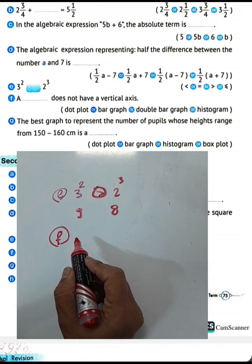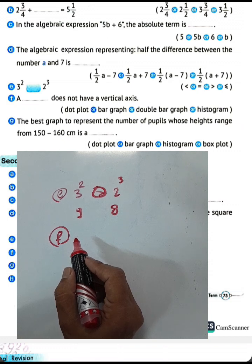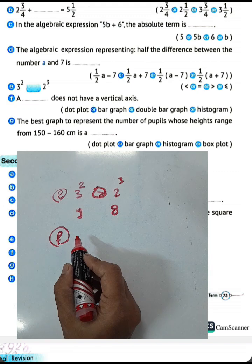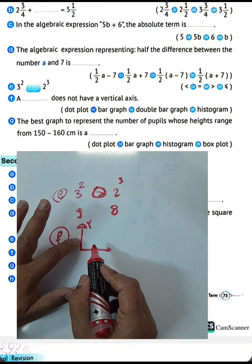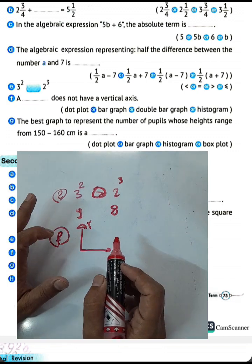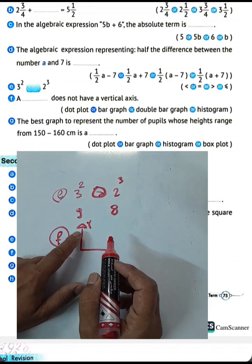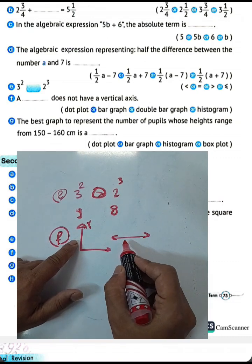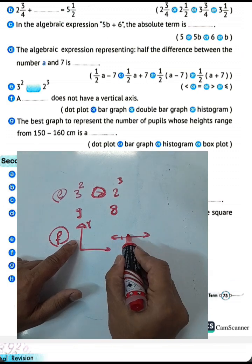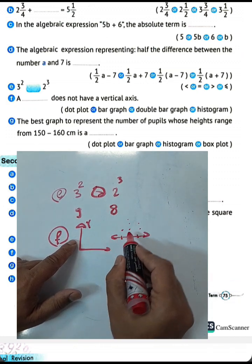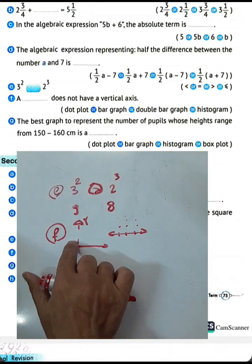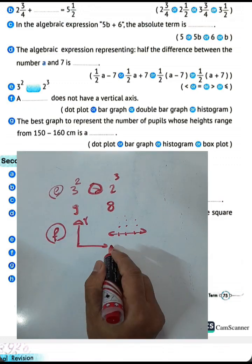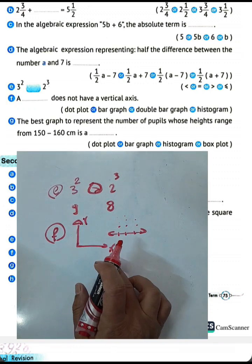We choose a dot plot. A vertical axis means an axis like Y. We choose dot plot because a dot plot is like a number line — you write all numbers on a line and mark dots above it. A dot plot doesn't have a vertical axis. The vertical axis is Y and the horizontal axis is X.